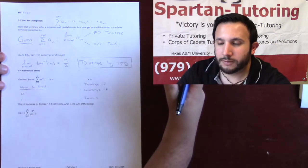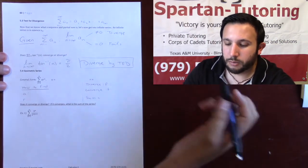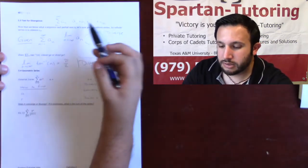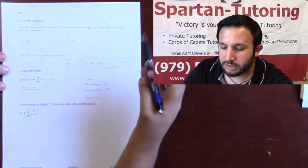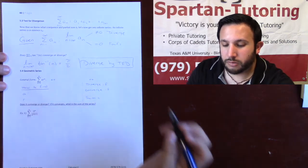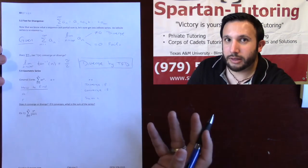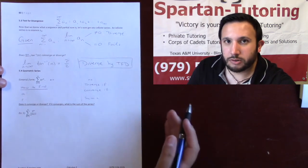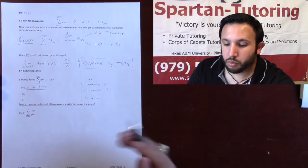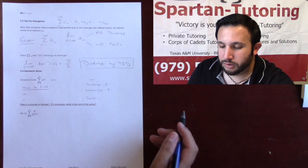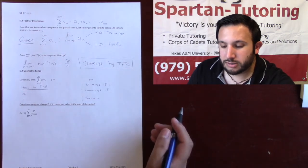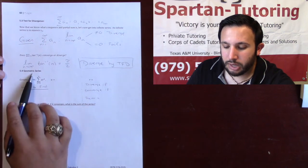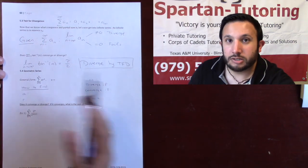It is imperative that you understand the difference between a sequence, which is a list, and a series, which is the sum of that list. You're going to be thrown thousands of rules as to whether things converge or diverge, but if you understand what things are, these rules become more intuitive. The test for divergence is the very first type we're going over. Join me in the next video and we'll talk about geometric series.